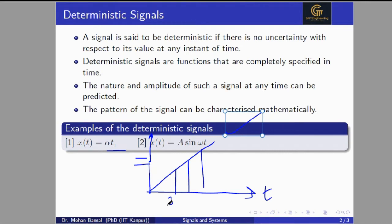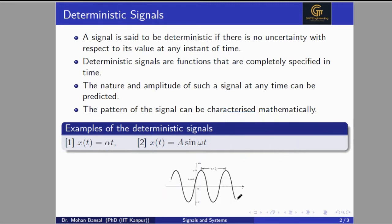For example, at this point the value is 3, so this will be 3α. If it is 5, it will be 5α for x(t) = αt. This is one signal which is the cosine signal — a shifted cosine signal — and this is the waveform of the deterministic signal. We can predict any function value at any time instant, defined mathematically: cos(ωt), sin(ωt), At, Bt, U(t) — the unit step function — e^(jωt), and e^(at) are all deterministic signals. We can predict the function value at any time instant.